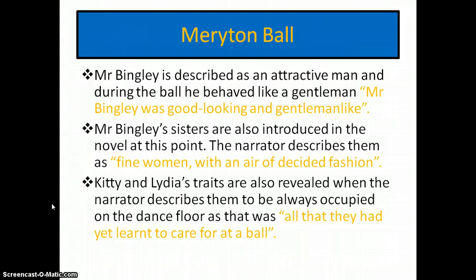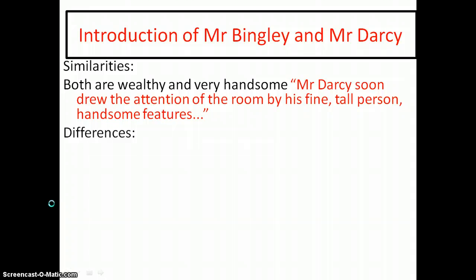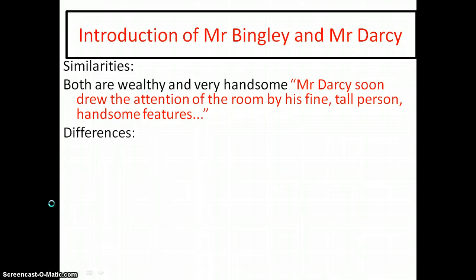Another significant part of Chapter 3 is the juxtaposition of Mr Bingley and Mr Darcy. This ball is thrown for society to see the newly eligible young men who have arrived in the neighbourhood. Both share a few similarities: they are very wealthy. Mr Bingley earns 5,000 a year, while Mr Darcy has 10,000 a year — comparing to today, almost like a millionaire, somebody so extremely wealthy you couldn't spend that amount even if you tried.